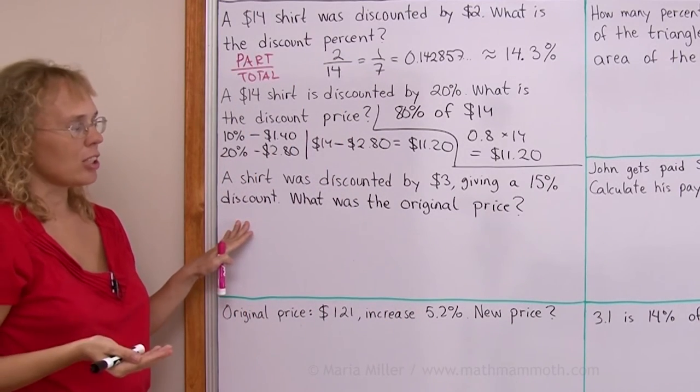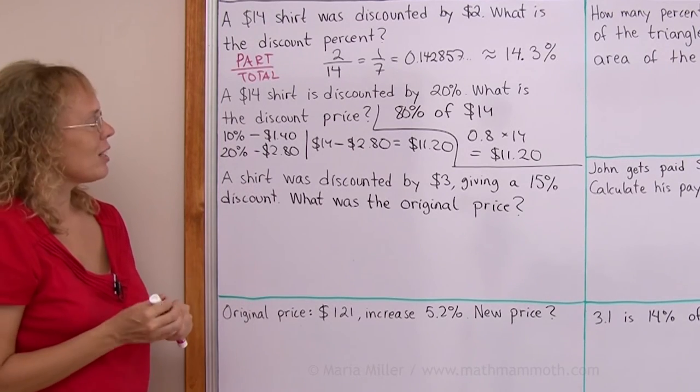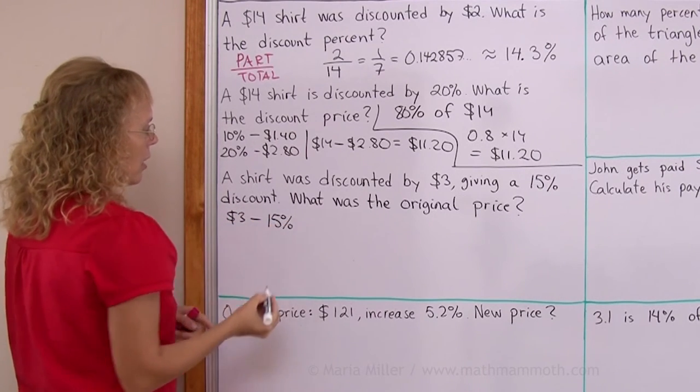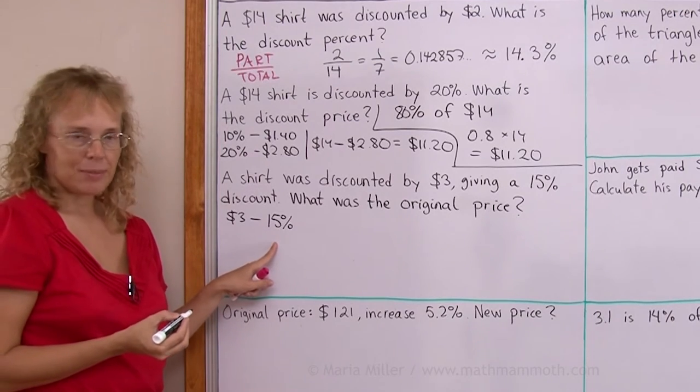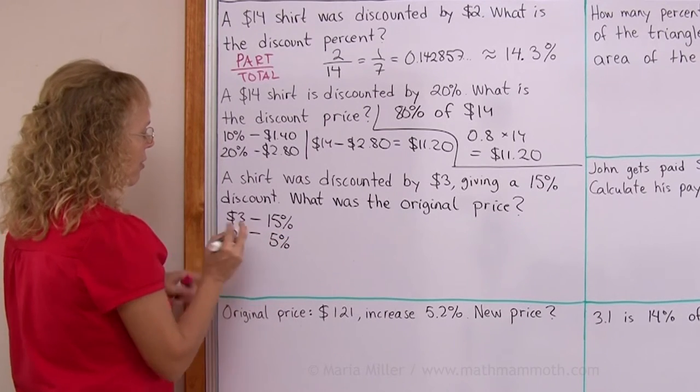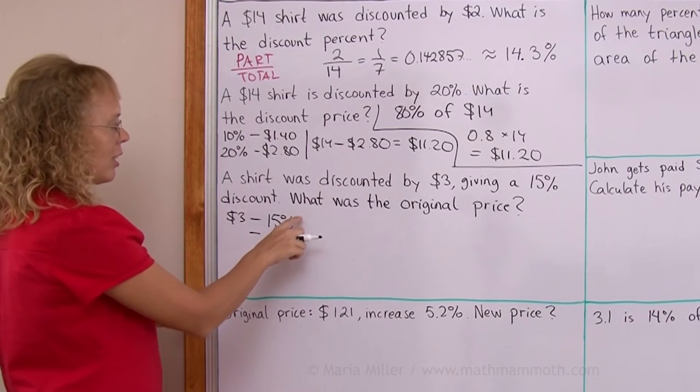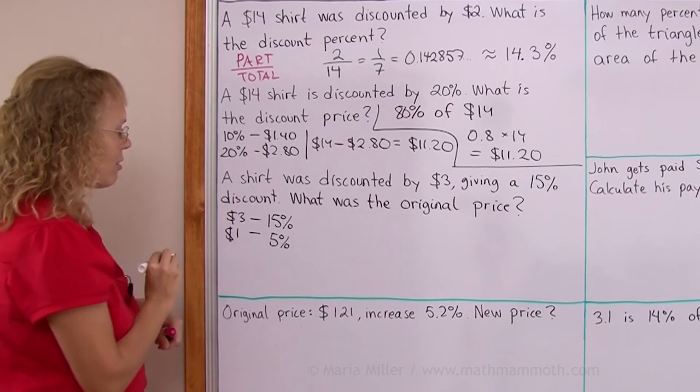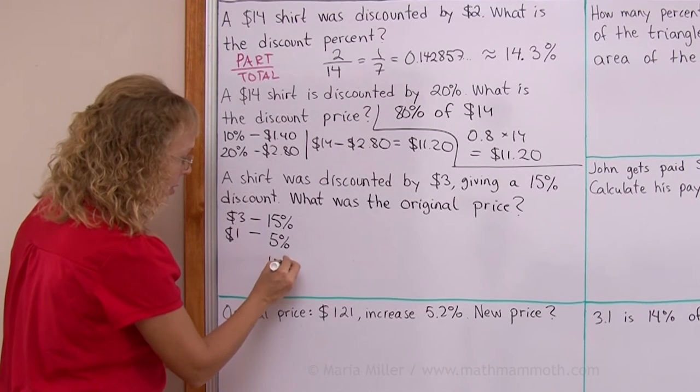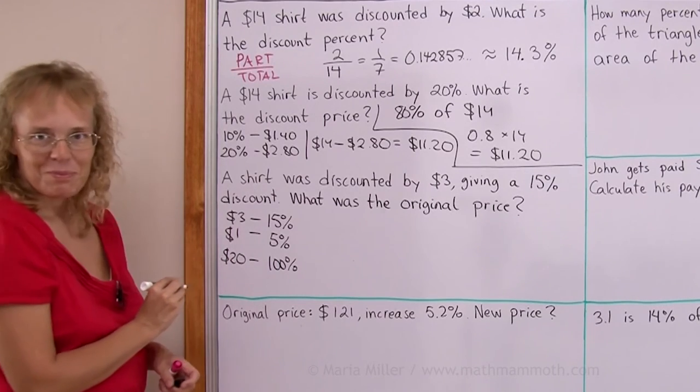The shirt was discounted by $3 and that was a 15 percent discount. So how much is the original price? Now there's one way to solve this. $3 corresponds to 15 percent. I could then find 1 percent and then 100 percent. But in this case, it is easier to first find if $3 is 15 percent, then how much would be 5 percent? It would be just one-third of that or $1, right? And if $1 is 5 percent of the price, then how much is 100 percent of the price? That's a 20-fold multiplication here, so it will be $20.